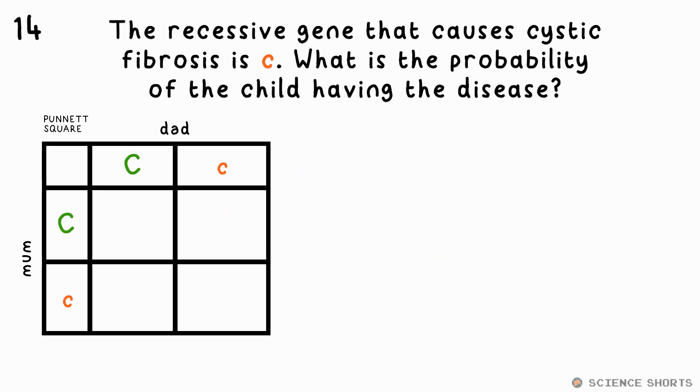Question 14. Here's a Punnett square for parents carrying the recessive gene or allele that causes cystic fibrosis. What's the probability that their child will actually have the disease?